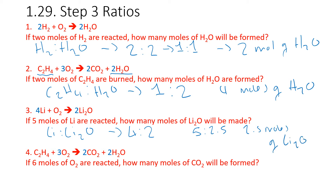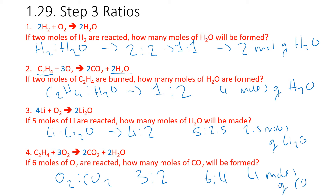Question 4: C2H4 plus 3O2 goes to 2CO2 plus 2H2O again. This time we have 6 moles of O2 reacting — how many moles of CO2 will be formed? We've got 3 in front of oxygen and 2 in front of carbon dioxide. 6 to 4 is the same as 3 to 2 — you multiply each side by 2 to get 6. So if we started with 6 moles of oxygen, we're going to produce 4 moles of CO2.